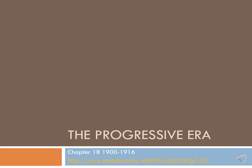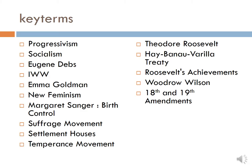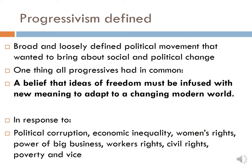Hi students, welcome back. Today we are going to get into the Progressive Era of American history. This corresponds with material from chapter 18 of your text. We're going to begin by defining progressivism, present examples of different progressive movements in the early 20th century, move on to talk about the first progressive president Theodore Roosevelt, and then end by talking about Woodrow Wilson.